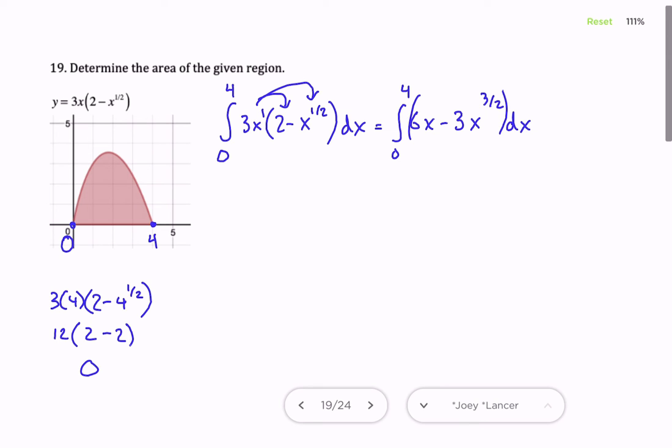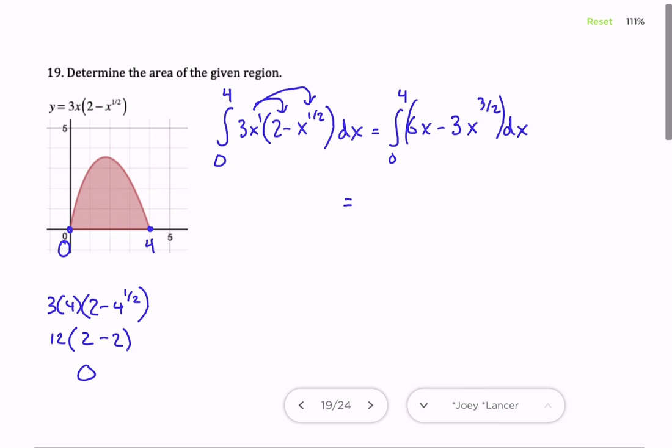And then with respect to x, so we just want to find that antiderivative now. So 6x squared over 2 minus 3x to the, well, 3/2 plus 1, that's another 2/2, so 5/2, and then over 5/2.